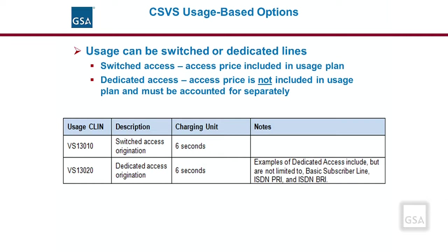In the table below, we see the two standard usage-based CLINs. As shown in the table, CSVS is available over switched or dedicated access lines. When an agency orders the usage-based CSVS and selects switched access, the access price is included in the CSVS usage plan. When an agency orders the usage-based CSVS and selects dedicated access, the access price is not included in the CSVS usage plan — the access is a separate cost.